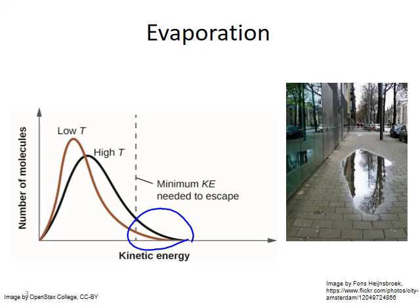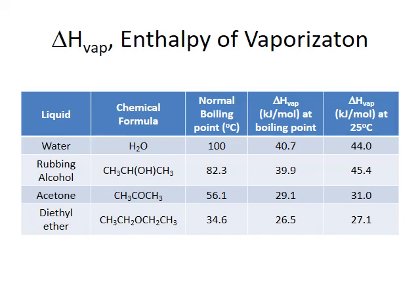As the temperature increases, that fraction of molecules with enough escape energy actually increases, as we can see with the black curve. So the higher the temperature, the more molecules that break free and enter the gas phase. The amount of escape energy needed depends on the strength of the intermolecular attractions in the liquid — in general, the weaker the attractions, the less energy necessary to escape the liquid phase. The minimum energy needed for one mole of liquid molecules to break free of their intermolecular attractions and become gas molecules is known as the enthalpy of vaporization, or delta H-vap.